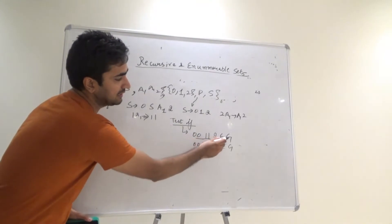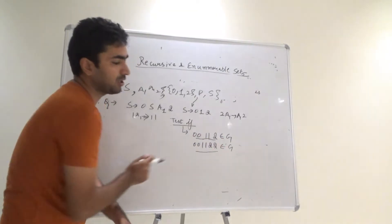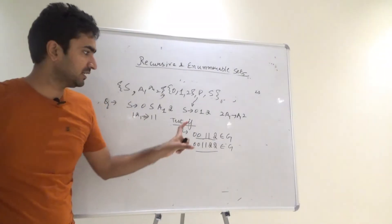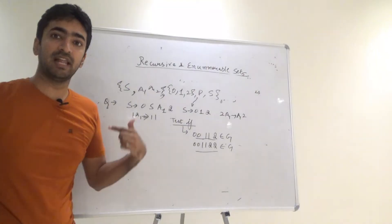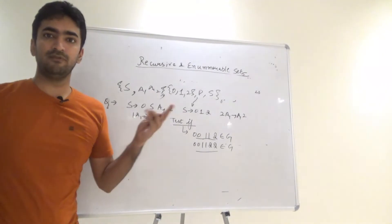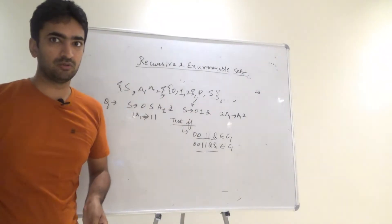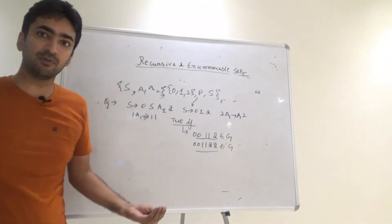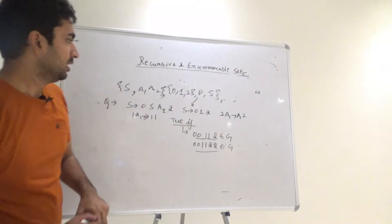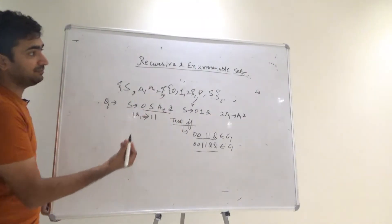We have to check whether 0 0 1 1 2 is a part of this grammar, or whether 0 0 1 1 2 2 is a part of this grammar or not. If there is a procedure to find whether these strings are acceptable by the language or not, that means the language is recursively enumerable. There will be strings that belong and strings that do not belong, but if there is a procedure to determine that, the language is recursively enumerable.